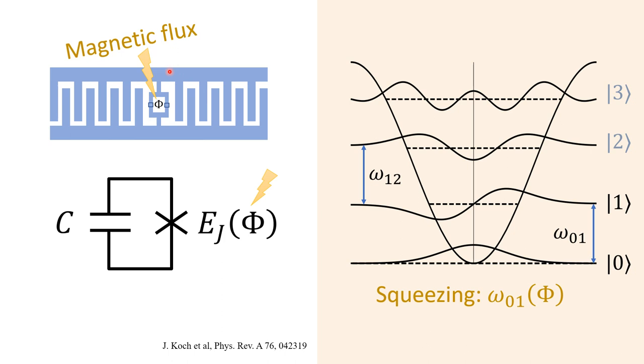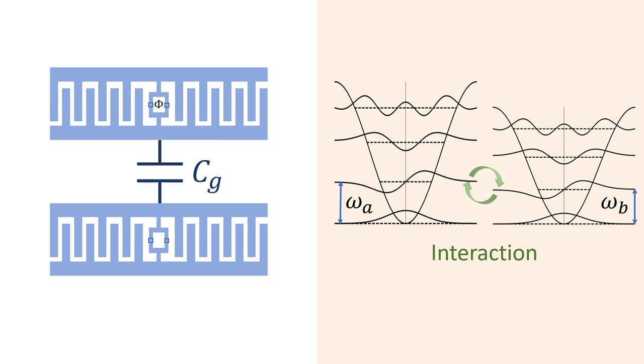In this work, we consider tunable frequency qubits. These qubits have SQUIDs instead of junctions, which we can control using magnetic fields. By applying a certain magnetic flux, we can change the depth of the potential and thereby tune the frequency of the qubit. This process is analogous to the squeezing of a harmonic oscillator, and we have studied it as such.